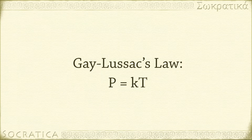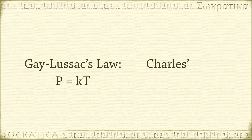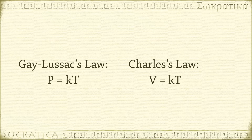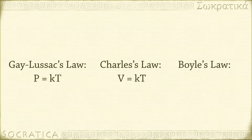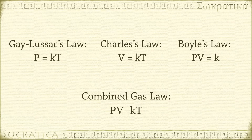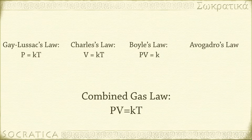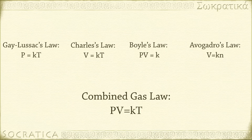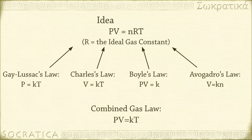Gay-Lussac's law relates temperature and pressure for a gas, but there are other gas laws which relate the other essential variables associated with a gas. Charles' law is the relationship between temperature and volume. Boyle's law is the relationship between pressure and volume. The combined gas law puts all three together: temperature, pressure, and volume. Notice that to use any of these laws, the amount of gas must be constant. Avogadro's law describes the relationship between volume and the amount of a gas, usually in terms of n, the number of moles. When we combine all four laws, we get the ideal gas law.